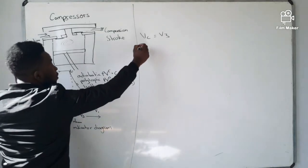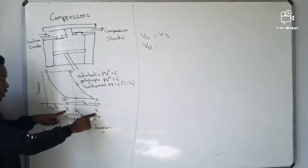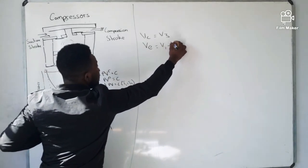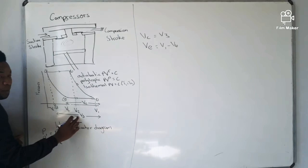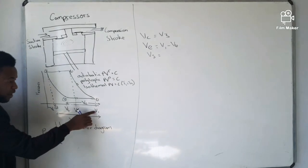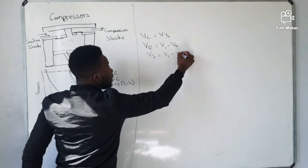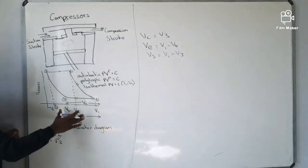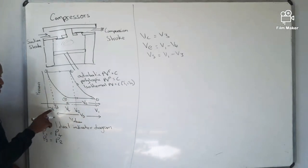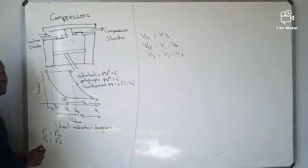I've also identified VE, which is the effective volume. VE goes from V1 up to V4, so we can say VE equals V1 minus V4. We also have what we call the swept volume, Vs. The swept volume goes from V1 up to V3, so to get the swept volume you say Vs equals V1 minus V3.